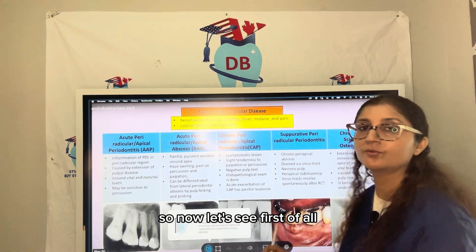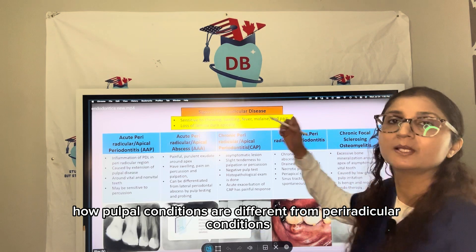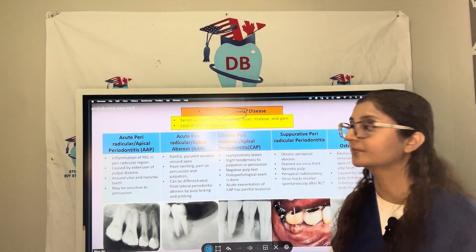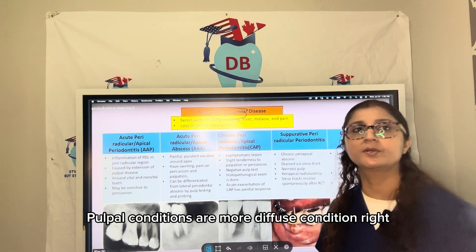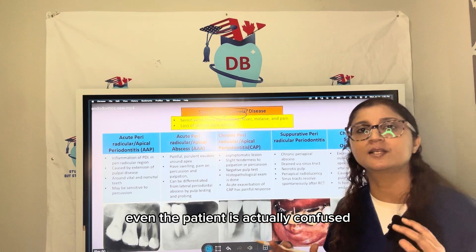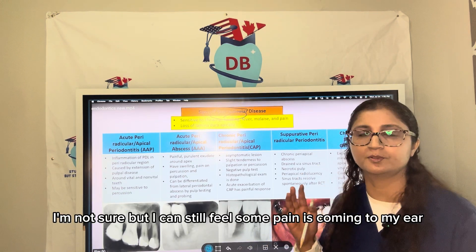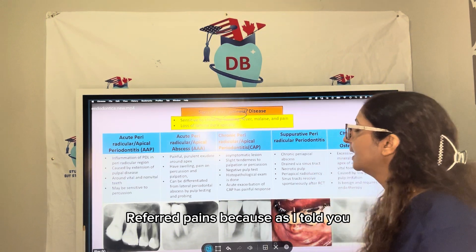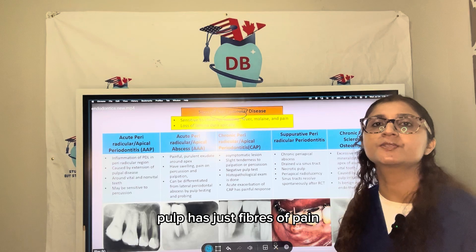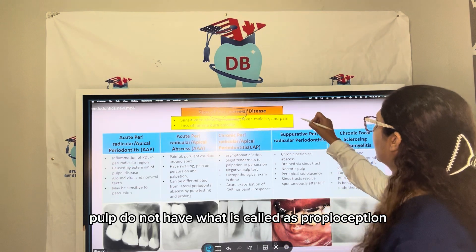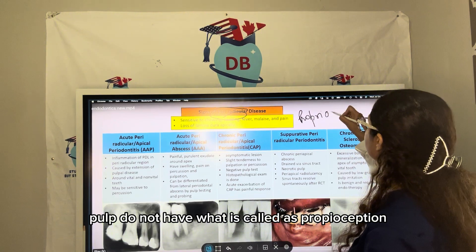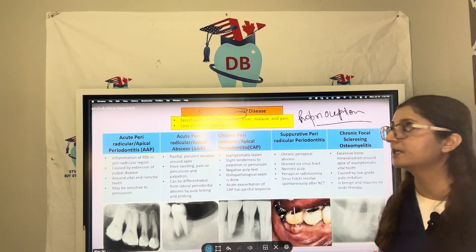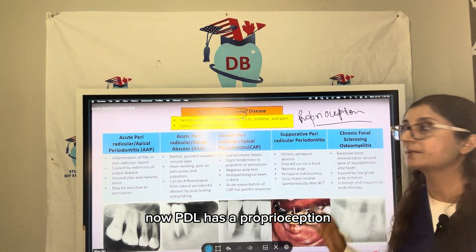Pulpal conditions are more diffuse — the patient is confused about which tooth is hurting and may feel pain radiating to the ear. This is because the pulp has only pain fibers and lacks proprioception, which is the positioning sense. The PDL fibers, however, do have proprioception.